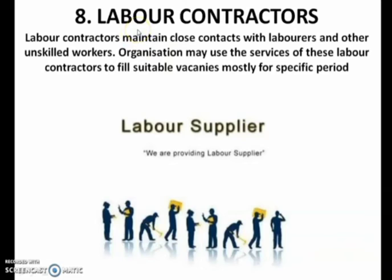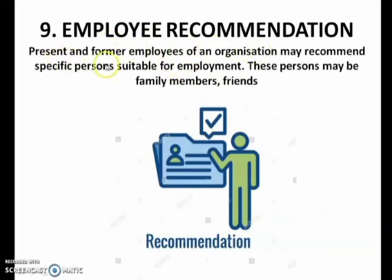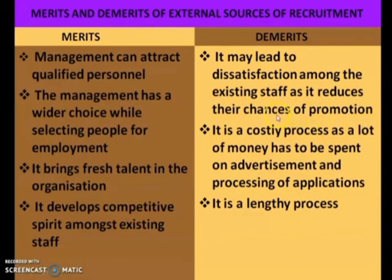The next type of external source is labor contractors. Labor contractors maintain close contact with laborers and other unskilled workers. Organizations may use the services of these labor contractors to fill suitable vacancies, mostly for a specific period — contractors have a set of unskilled workers or laborers, and whenever there is a need, they fill the vacancies as per requirement. Next is employee recommendation. Present and former employees of an organization may recommend specific persons suitable for employment — these persons may be family members or friends. As per the recommendation of the employees, the vacant place can be filled up. These are the different external sources of recruitment.